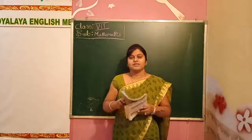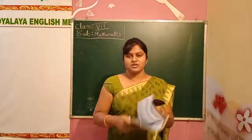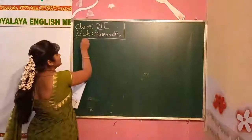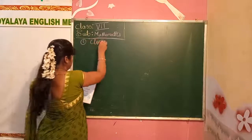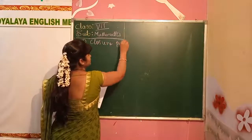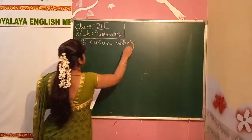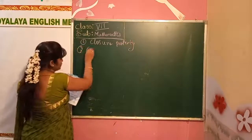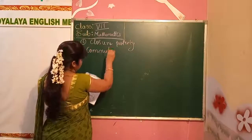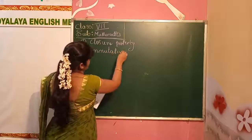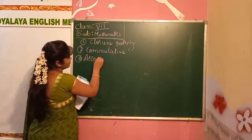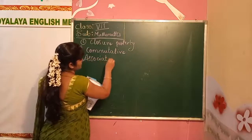In the previous class we covered 6 properties. The first one is the closure property. The second one is the commutative property. The third one is the associative property.